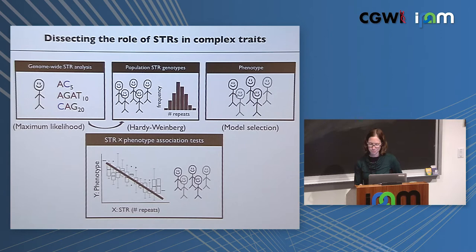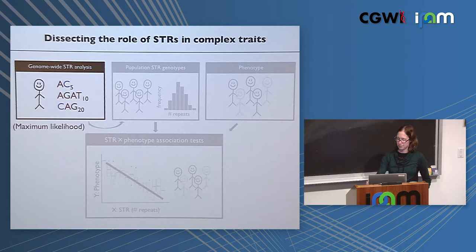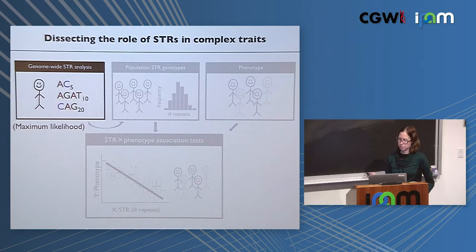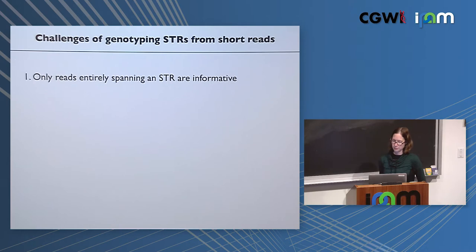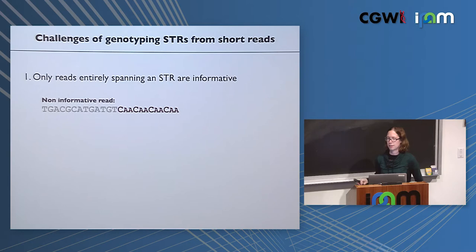First, we need tools for genome-wide STR analysis. STRs are routinely filtered from next-gen sequencing studies because they're tricky to analyze. Before discussing specific tools, I want to mention some challenges. Only reads entirely spanning an STR are completely informative of the number of repeat copies. A read that expands only partially into a repeat could be compatible with four copies, five copies, or any number greater — it's not entirely uninformative but doesn't give exact counts.